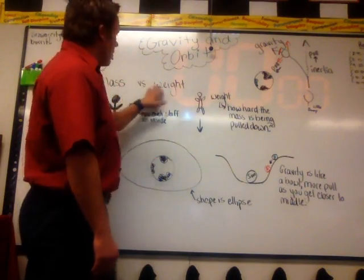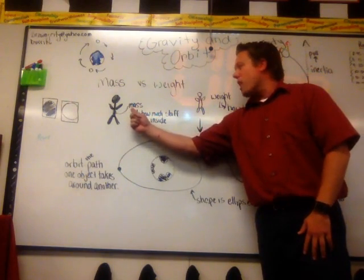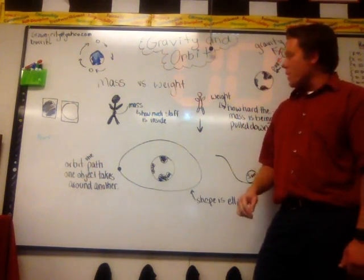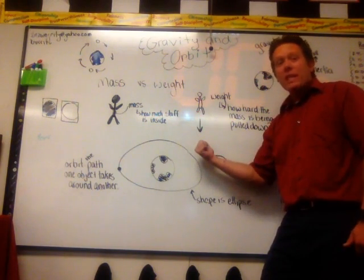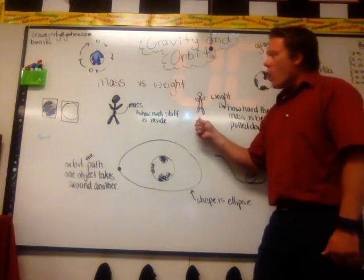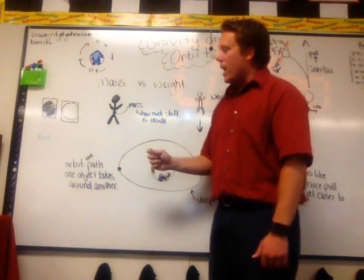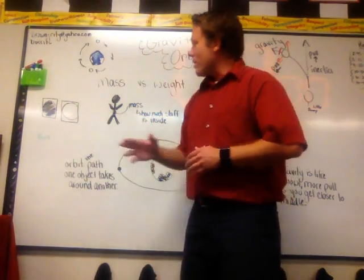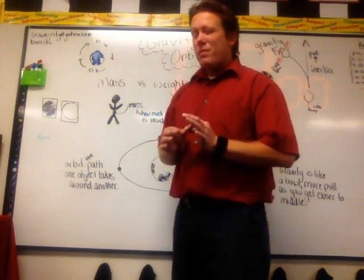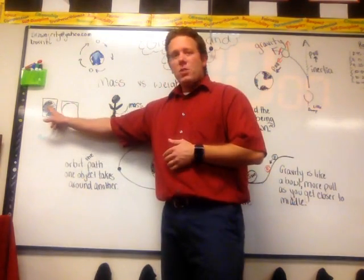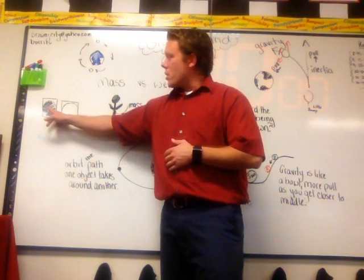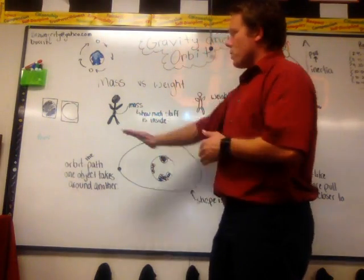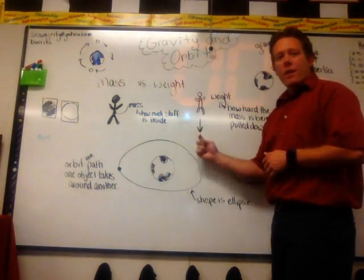One is the difference between mass versus weight. Mass is how much stuff is on the inside. Weight is how hard you're being pulled down — so depending on how hard gravity is pulling down on you, that's going to determine your weight. We showed that with two squares and two circles the same size: the solid dense square has more mass, even though it takes up the same space. Mass is the stuff on the inside; weight is how hard gravity is pulling down on you.